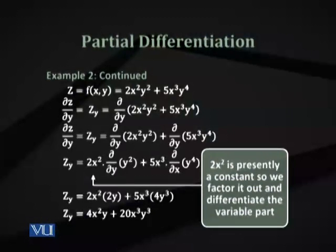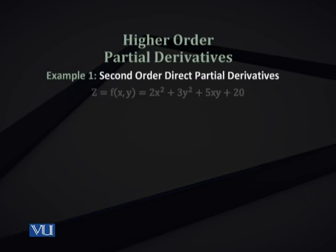If we have three independent variables, we will differentiate three times in different combinations. The concept extends naturally — with more independent variables, we have more first-order partial derivatives. The same rules apply: treat all variables except the one we are differentiating with respect to as constants.